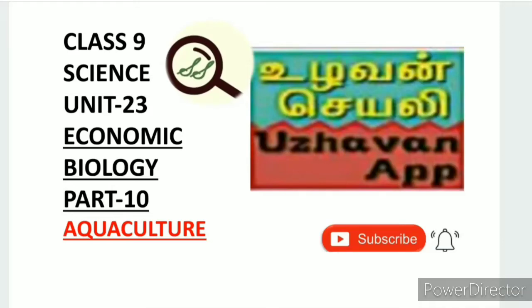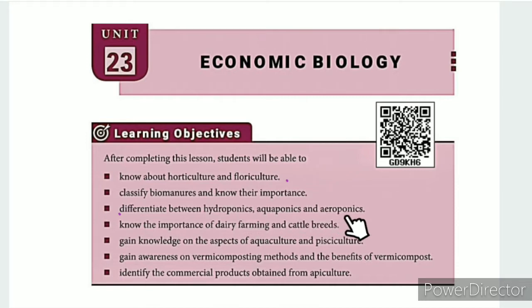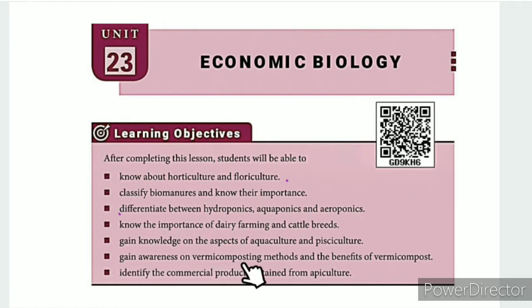Greetings from SS Class 9 Science Unit 23 Economic Biology Part 10: Aquaculture. The learning objectives are: know about horticulture and floriculture; classify bio-manuals and know their importance; differentiate between hydroponics, aquaponics and aeroponics; know the importance of dairy farming and cattle breeds; gain knowledge on the aspects of aquaculture and physical culture; gain awareness on vermicomposting methods and the benefits of vermicompost; identify the commercial products obtained from apiculture.